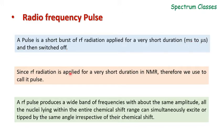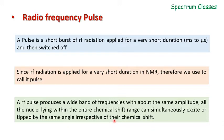Since radio frequency radiation is applied for a very short duration in NMR, we call it a pulse. The important point is that a radio frequency pulse produces a wide band of frequencies with about the same amplitude, and all the nuclei lying within the entire chemical shift range can simultaneously be excited or tipped by the same angle, irrespective of their chemical shifts. We are going to discuss this in the next slides.